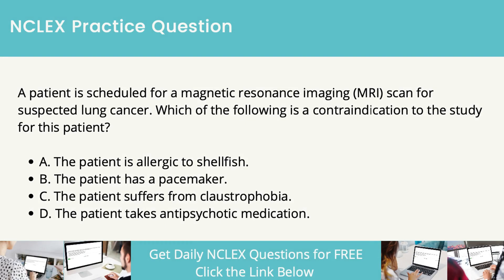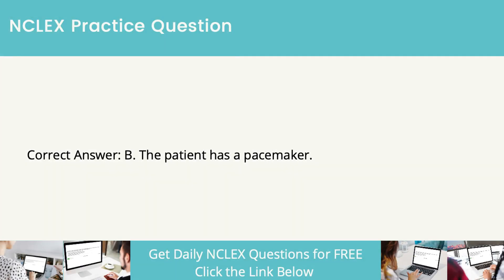A patient is scheduled for a magnetic resonance imaging (MRI) scan for suspected lung cancer. Which of the following is a contraindication to the study for this patient? The patient is allergic to shellfish. The patient has a pacemaker. The patient suffers from claustrophobia. The patient takes antipsychotic medication. The correct answer is the patient has a pacemaker.